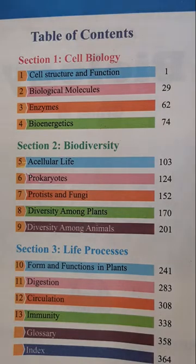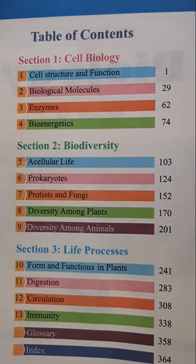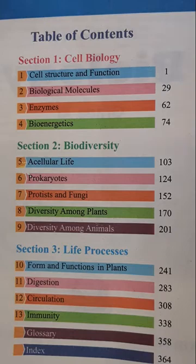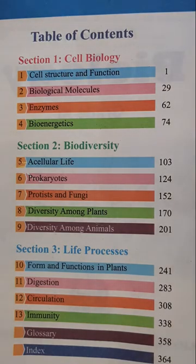In Chapter 7, we will study two more kingdoms: Kingdom Protista and Kingdom Fungi. In Chapter 8, we will study Kingdom Plantae — the variety of plants. Chapter 9 is related to Kingdom Animalia, in which we will study a variety of animals, both invertebrates and vertebrates.